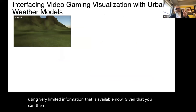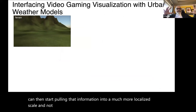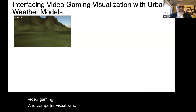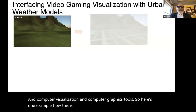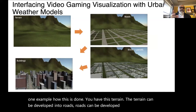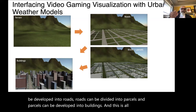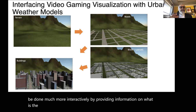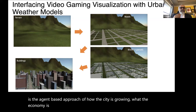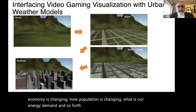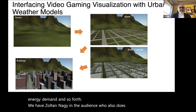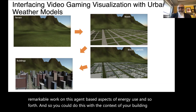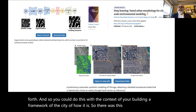One way we do this is using video gaming and computer visualization/graphics tools. You have terrain, which is developed into roads, roads into parcels, and parcels into buildings — done either as a sequence or interactively via agent-based approaches incorporating city growth, economic changes, population changes, and energy demand. There is a paper just out in PNAS Nexus that looks at deep learning, satellite imagery segmentation, and creation of images for weather and climate models.